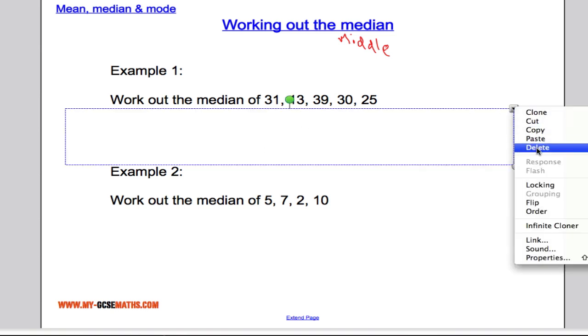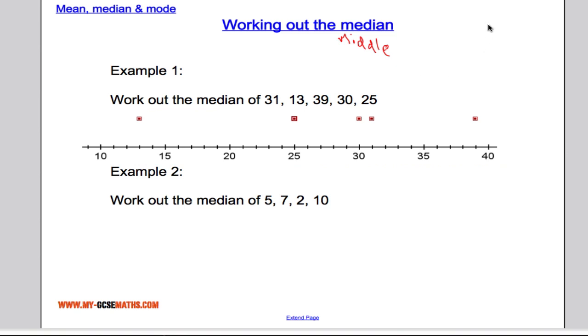Now what I've done here is I've actually represented the data on a number line so it's a little bit easier for you to see what's going on. So we can clearly see there's 13, there's your 25, there's your 30, 31, and 39. So which data point is going to be right in the middle so that I have the same number of data points to the left and to the right? Well, the answer must be 30. If I highlight that data point there, we can clearly see that we have two data points to the right and two data points to the left. So the middle data point, the middle value, must be 30.